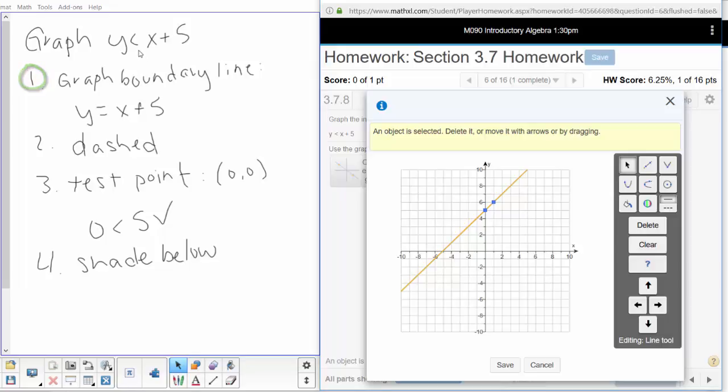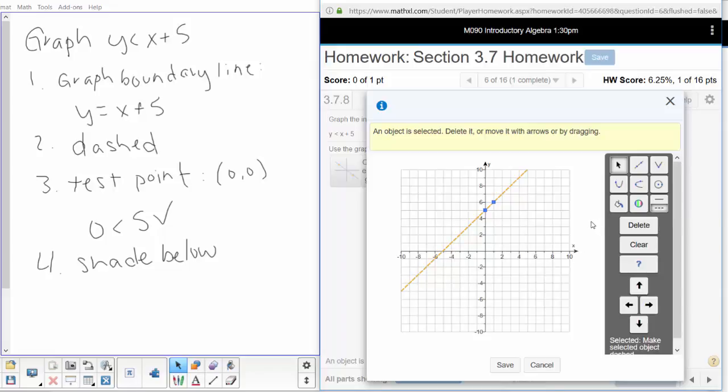But my inequality that is involved is less than. It's not equal to—we don't have the option of equality. I need to go over here and select this dashed line. I need to make the selected object dashed. That's telling me that I have less than or greater than.